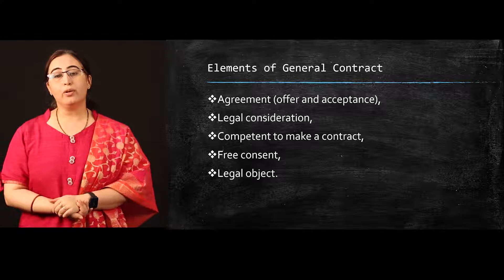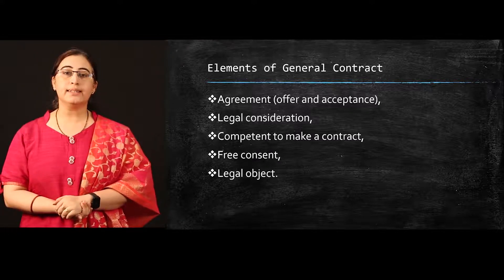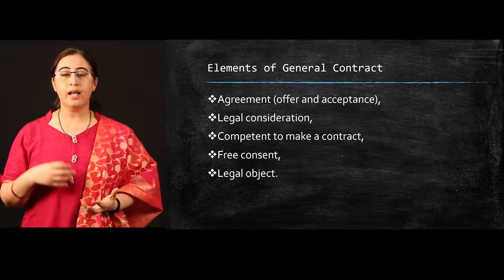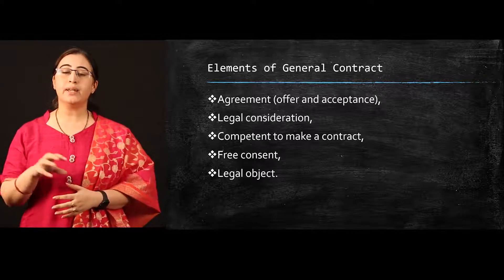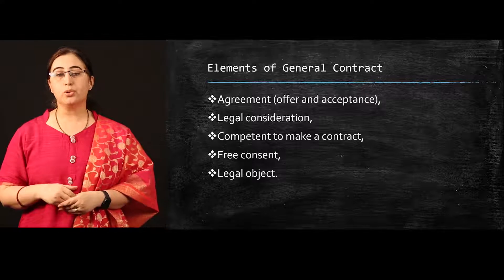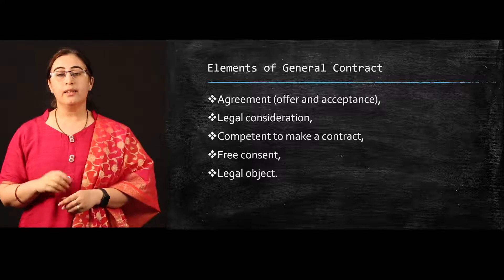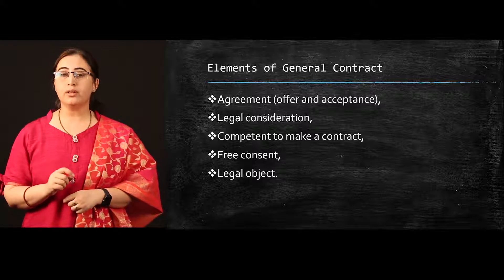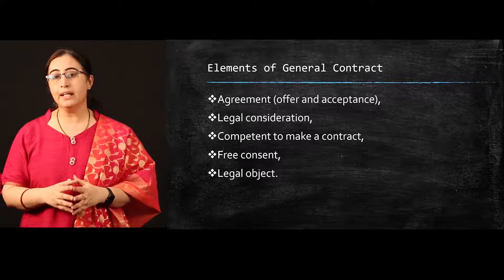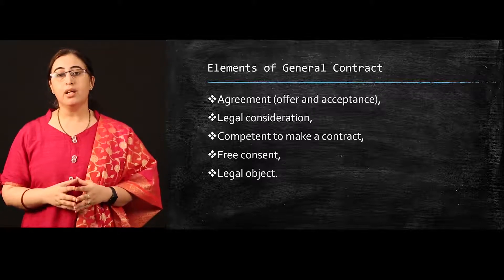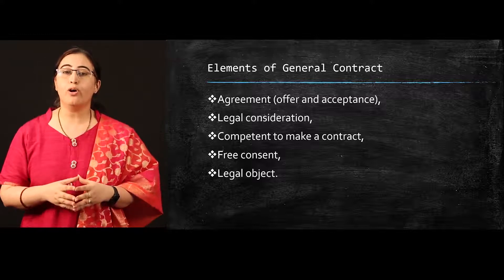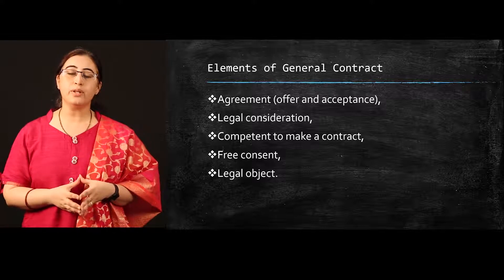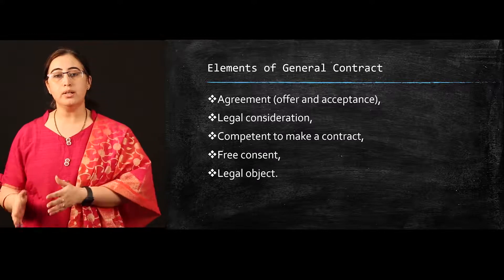One is the elements of general contract which is included in every type of contract, and second is special elements. The first element of any type of contract is an agreement. There must be one person who is offering something and another person who is accepting that particular offer. In the case of insurance, the insurance company is giving you an offer — the insurer is the offerer — whereas as an individual or a businessman, you are accepting that offer, making you the policy holder. So it is an agreement between the insurer and the policy holder.